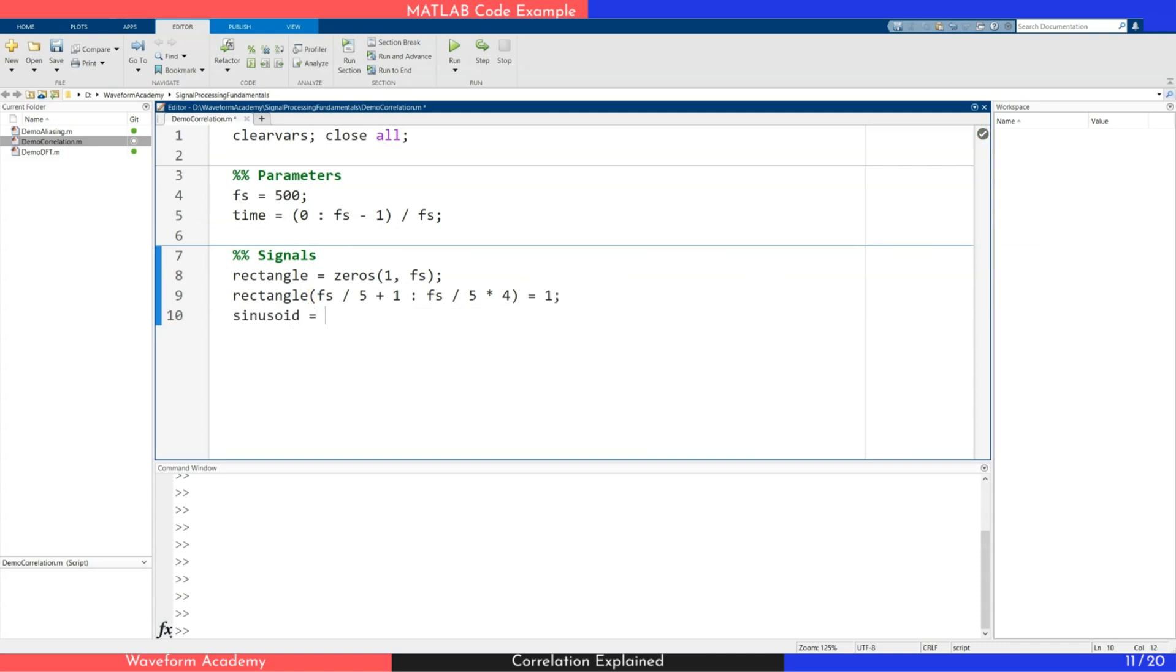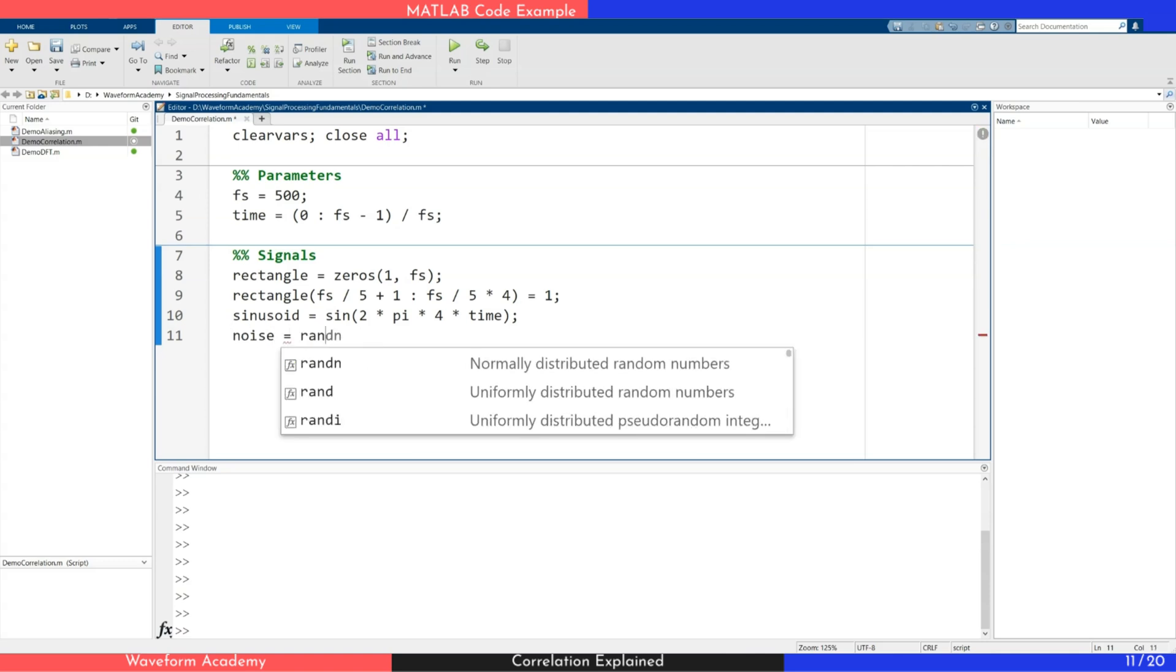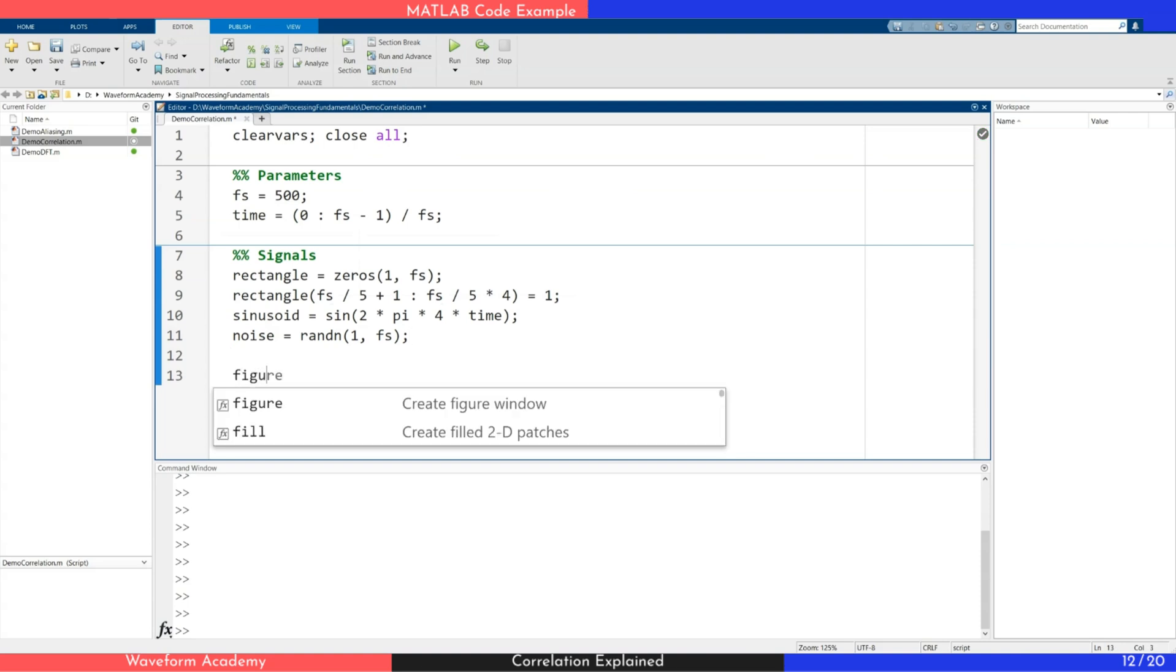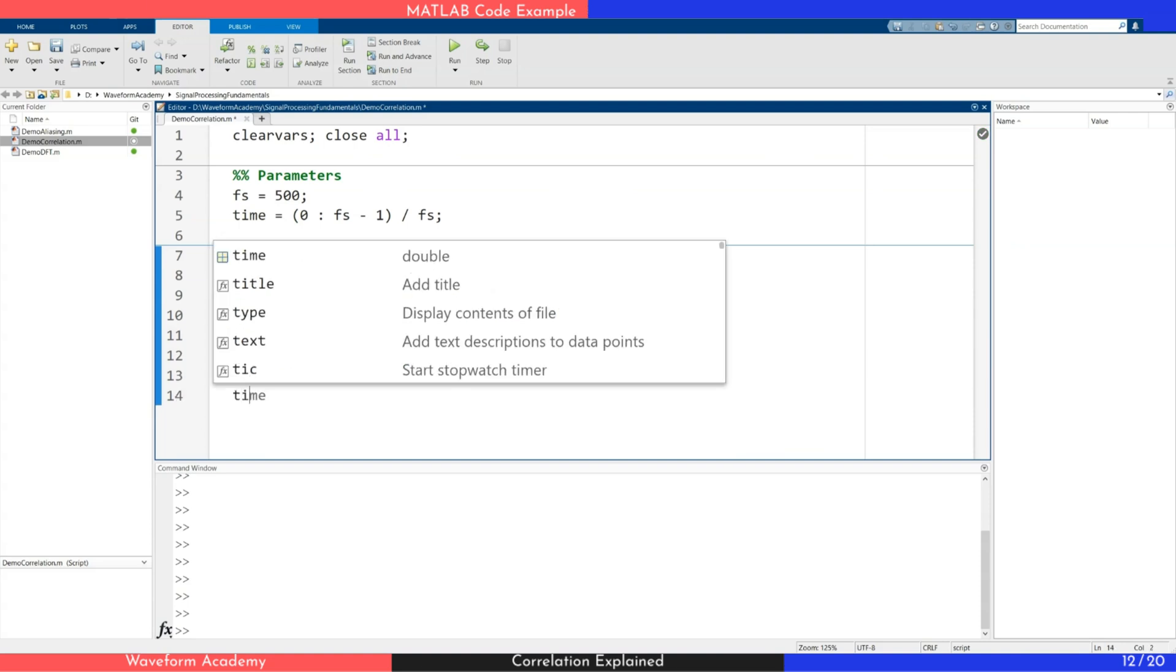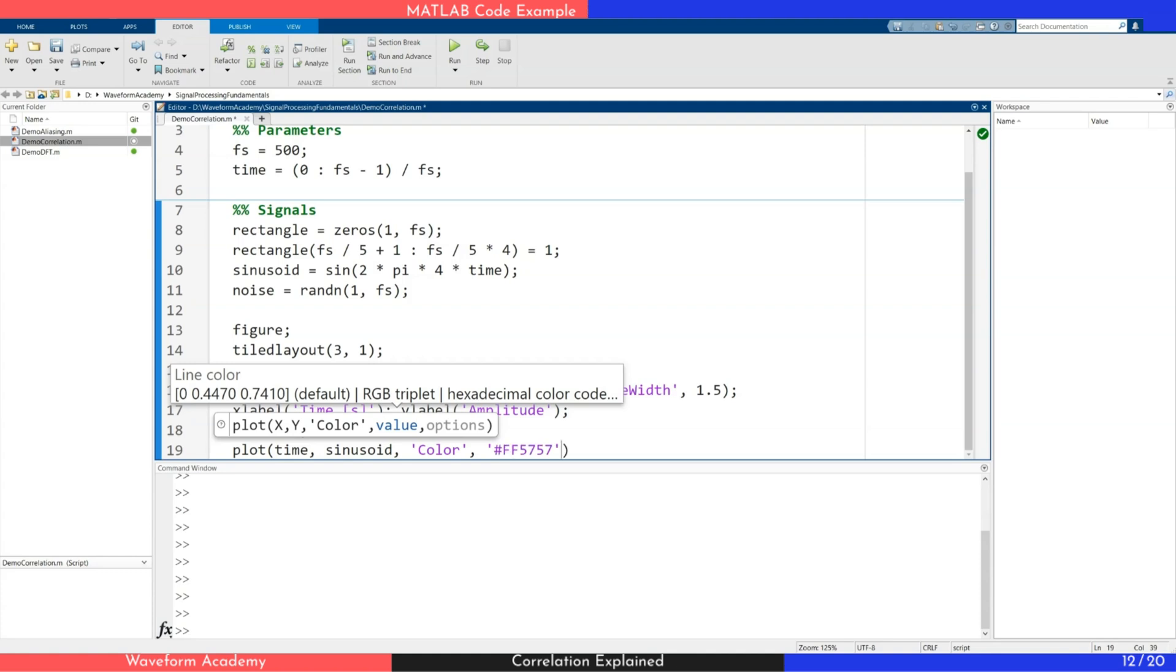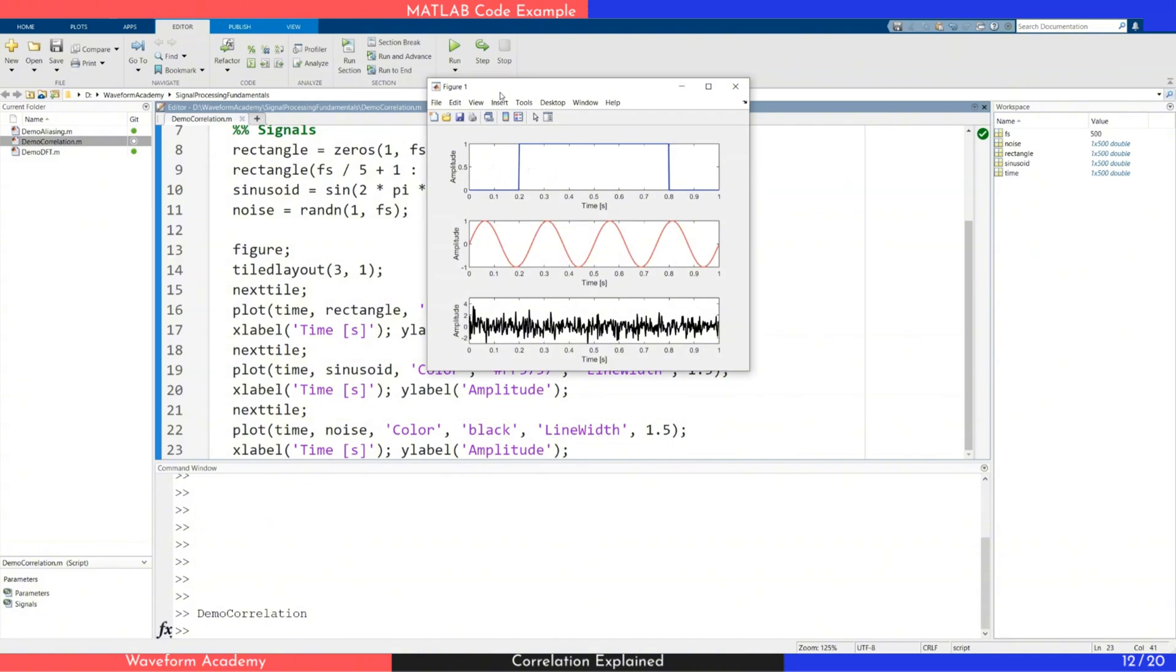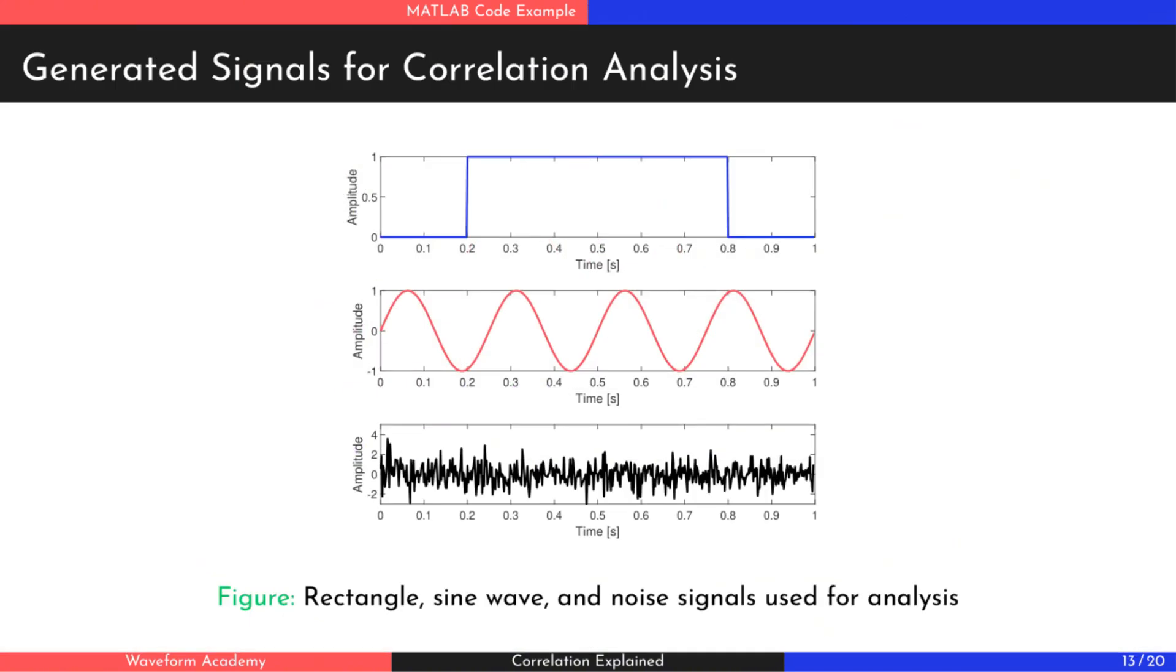Then, a sine wave at 4 hertz. Finally, we generate random noise using MATLAB's normal distribution function. We visualize these signals on a plot, each in a different color. Let's take a look at the result.